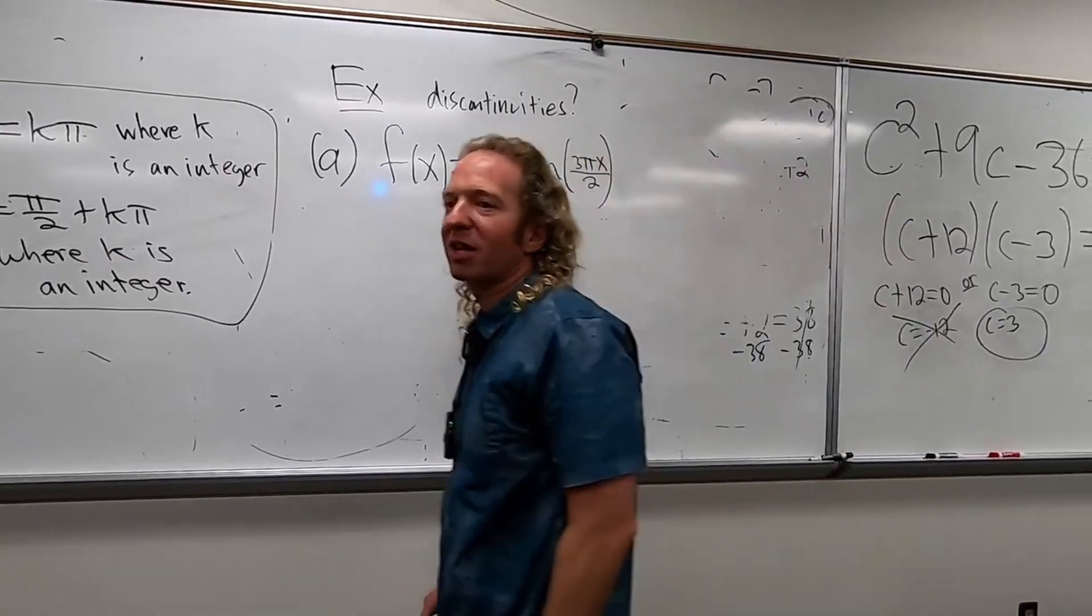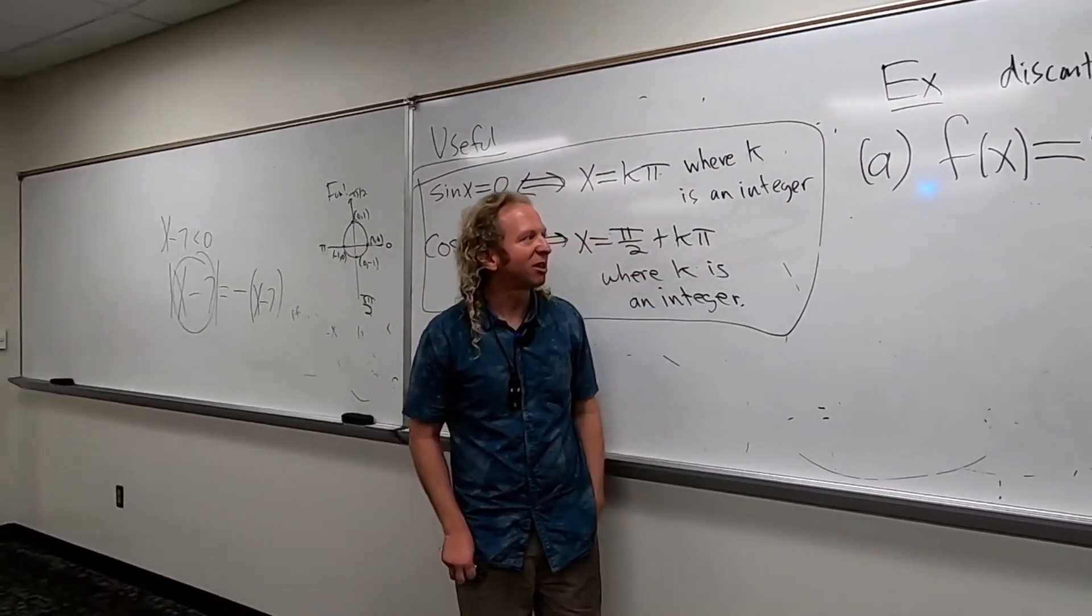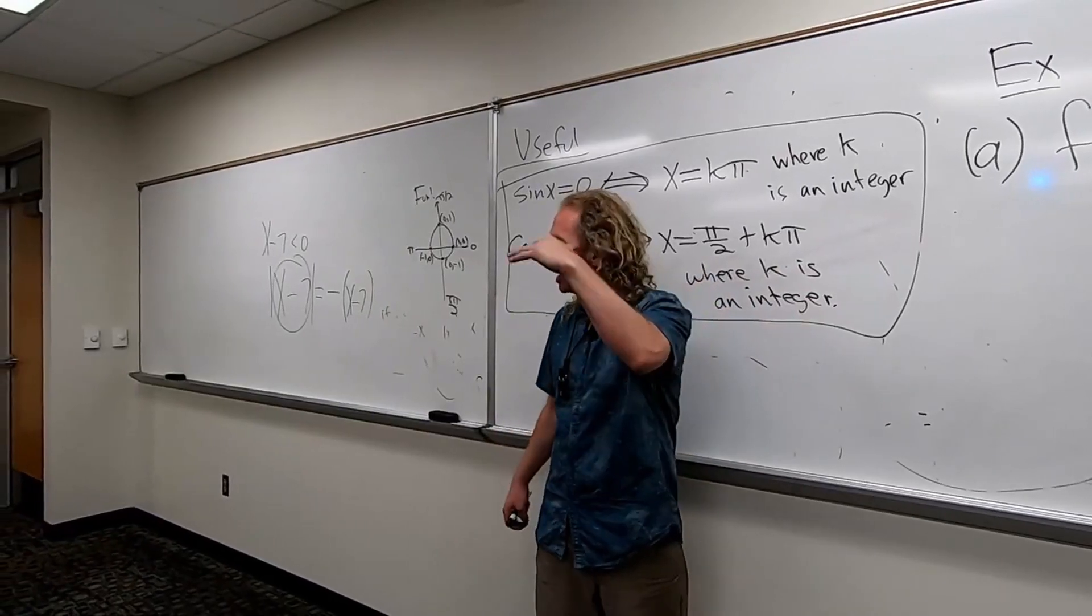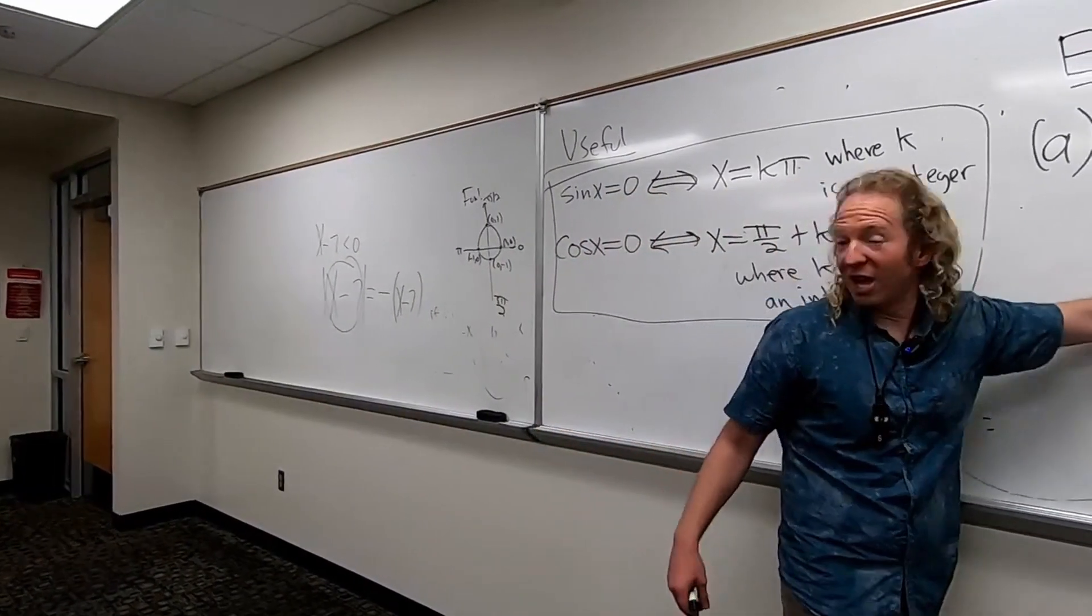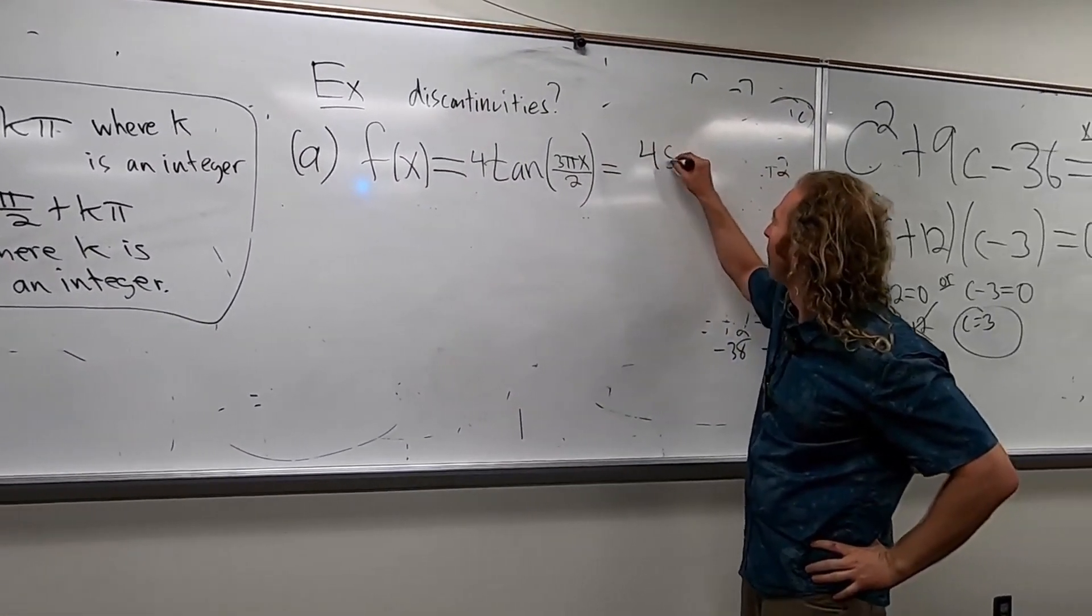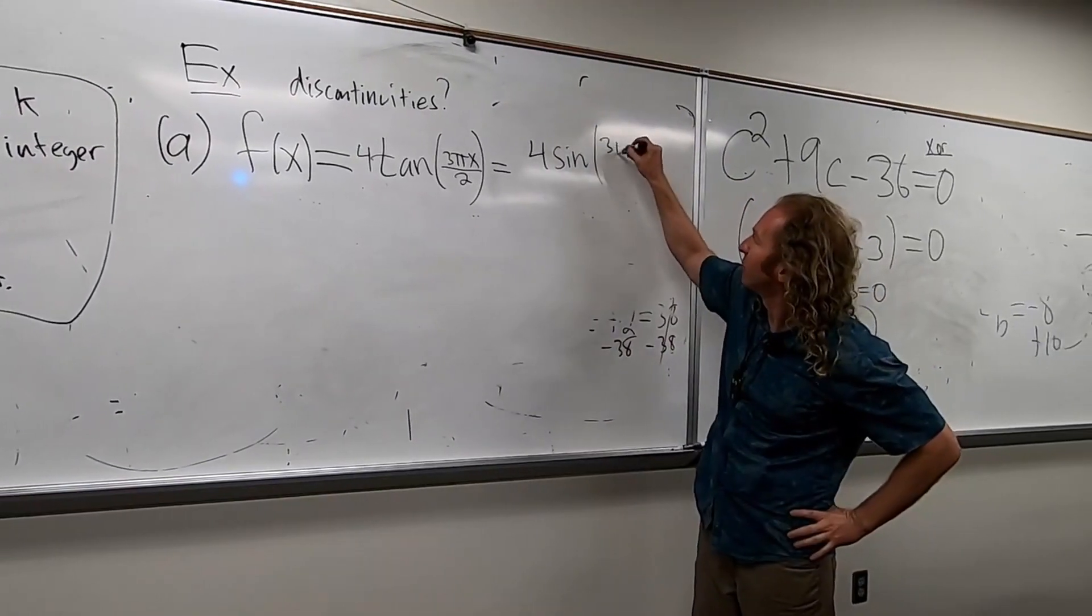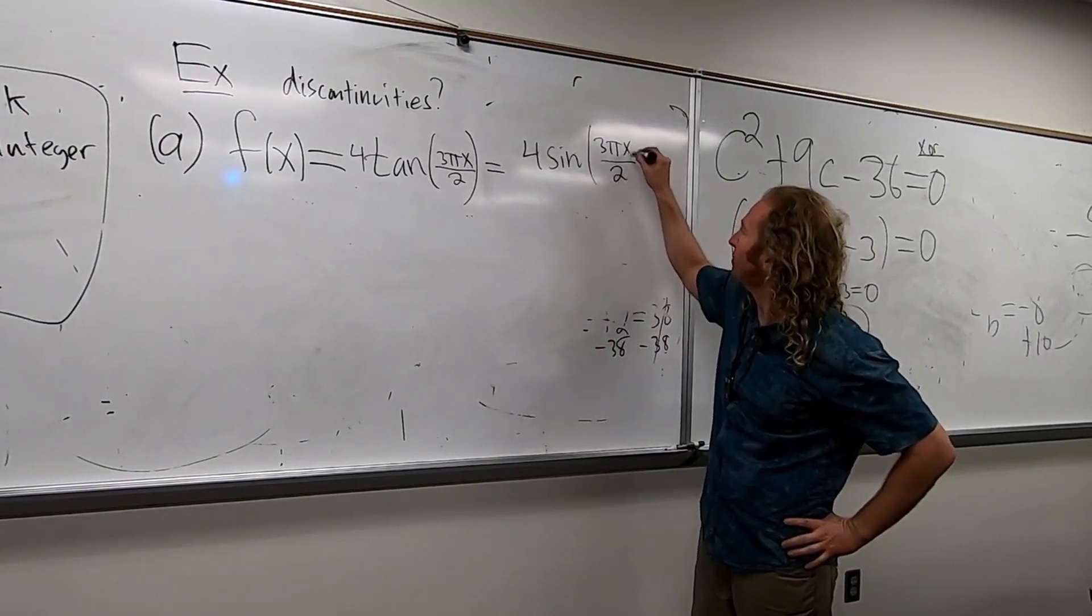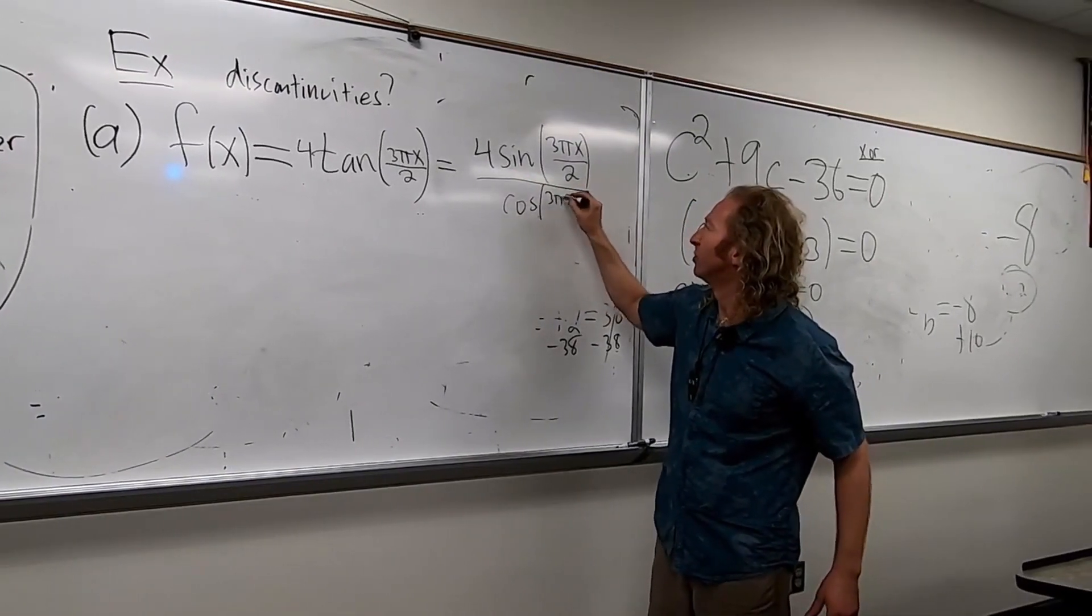So we're trying to find out where this is not continuous. I mean, I guess you could have the tangent graph memorized, but that's more work. Tangent is what over what? What's on the bottom? Sine over... Yeah, sine over cosine. So a good first step is to maybe rewrite it that way. So, like this. 3 pi x over 2.